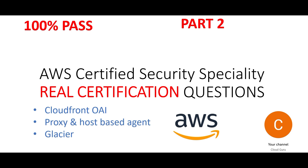This brings us to the end of part two. Always remember to focus on concepts and do not try to memorize the answers. This certification is primarily aimed at security professionals, but even if you are aspiring to be an AWS architect, I'd still recommend it. In this video we covered: CloudFront OAI to avoid direct S3 access, proxy and host-based agents to inspect IP packets, and S3 Glacier as an immutable long-term archival solution. Drop your feedback in the comments.